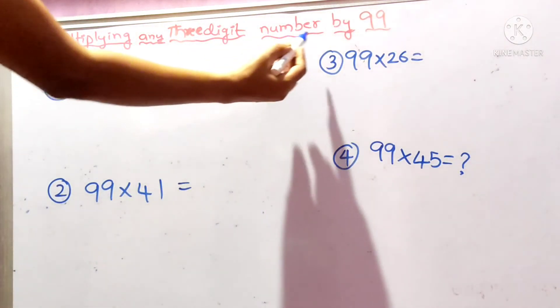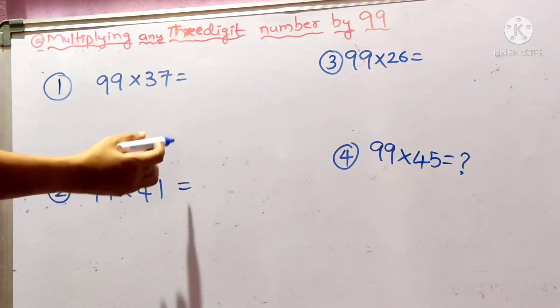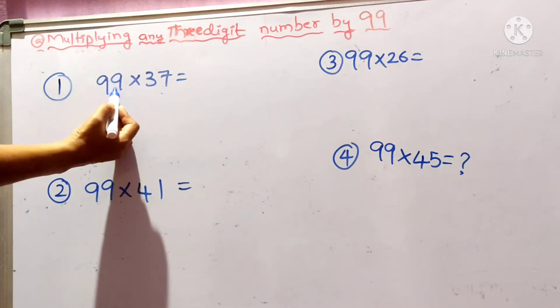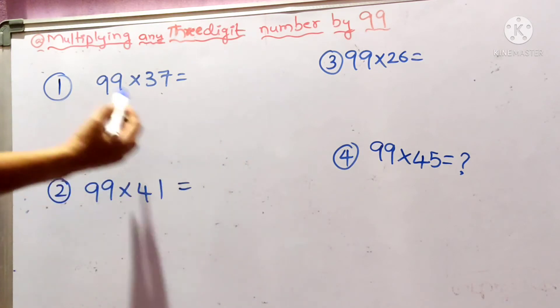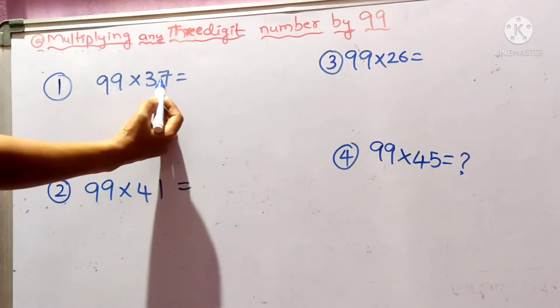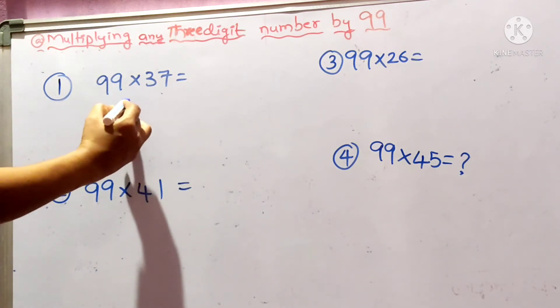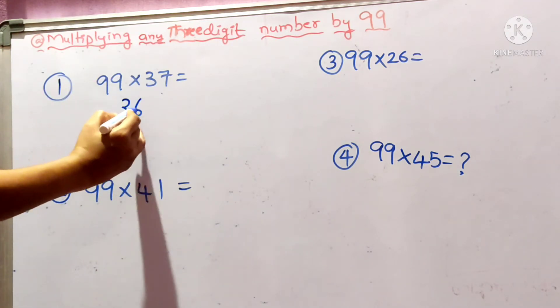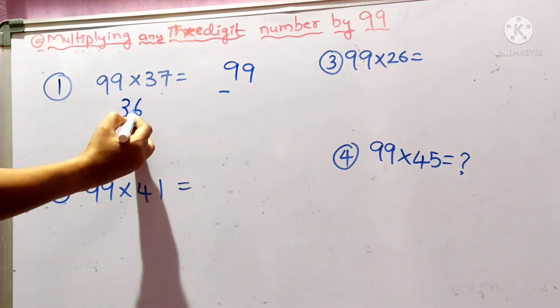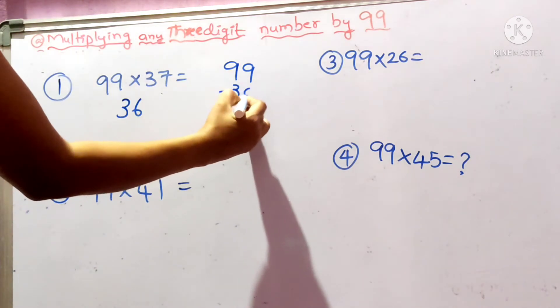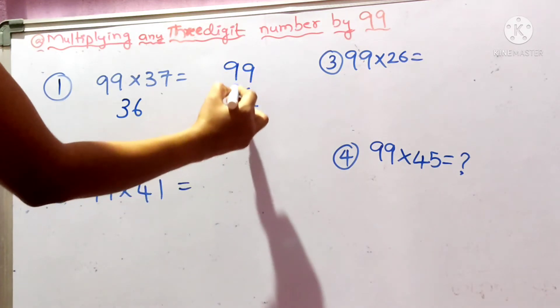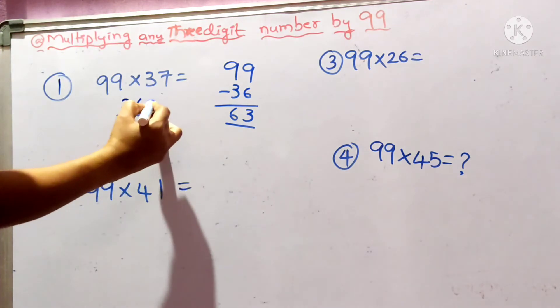Multiplying any number by 99. I have taken four questions here. 37 is a 2-digit number which is multiplied by 99. Similarly, I have taken other 2-digit numbers. First, 99×37. For doing this, other than 99 is 37. Less than 1 to 37, the value is 36. Write here.